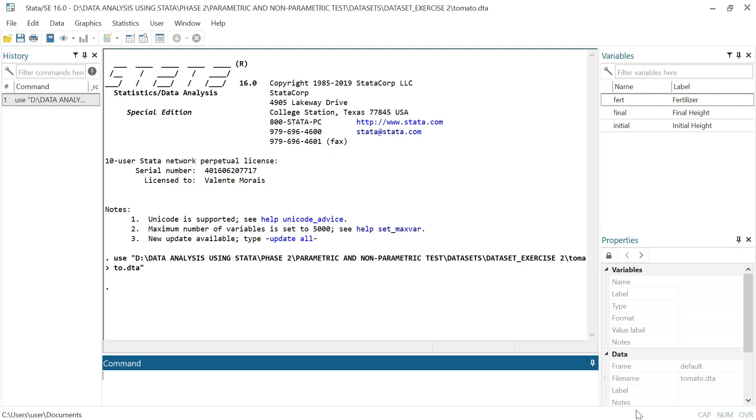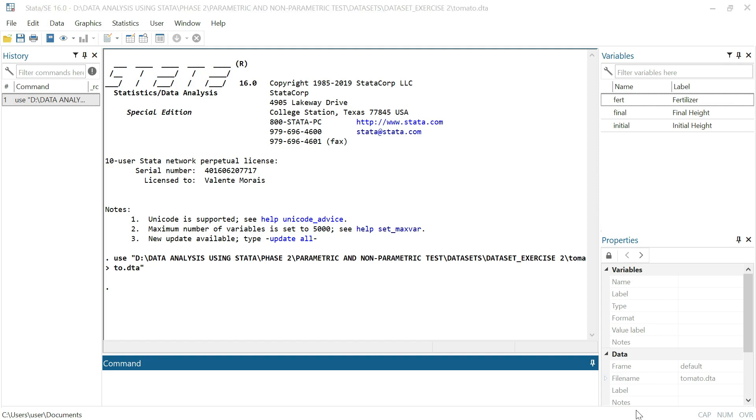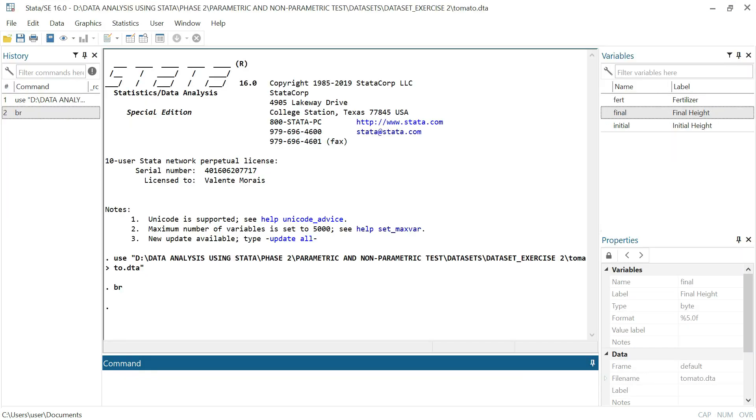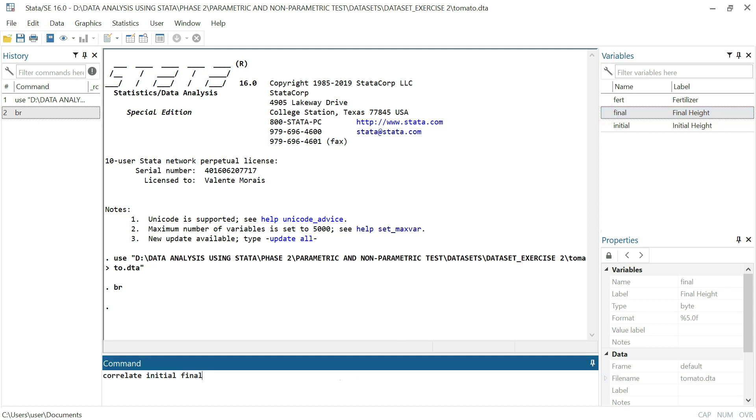Let's go to Stata and perform the test. First, let's check the datasets. Okay, we have three types of fertilizers: fertilizer type 1, fertilizer type 2, and fertilizer type 3. And we have the initial height and the final height of tomato. Now, let's perform the test. We want to see if these two variables have a positive relationship or a significant relationship or not.